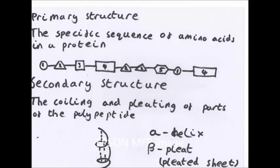After primary structure, you have the secondary structure. This is the coiling and pleating of parts of the polypeptide. Two products are formed. If it's coiled, it's an alpha helix. If it's pleated, it's a beta pleated sheet. That is the secondary structure.